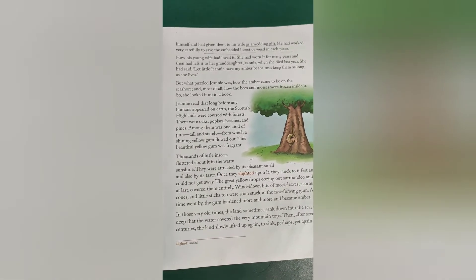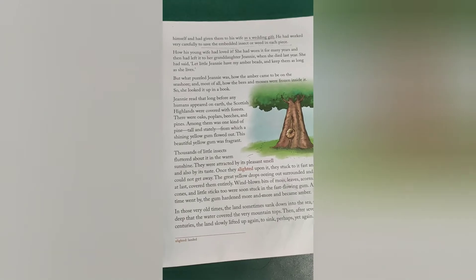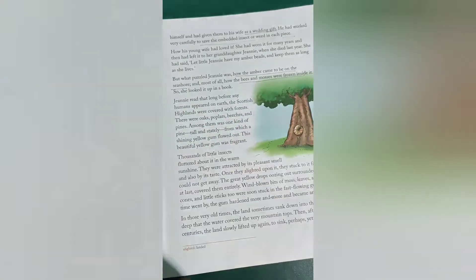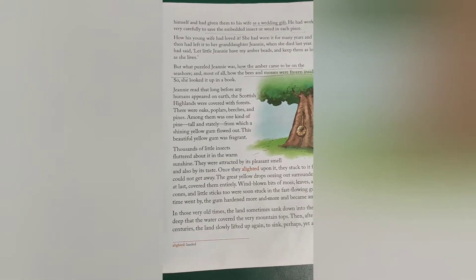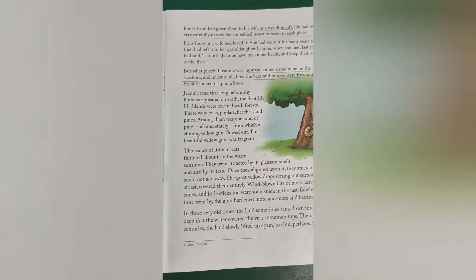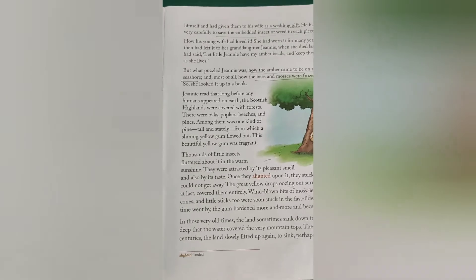So she looked it up in a book. There were two things puzzling Jenny: first, how the amber came to be on the seashore, and second, how the bees and mosses were frozen inside it. Jenny read that long before any humans appeared on earth, the Scottish Highlands were covered with forests.